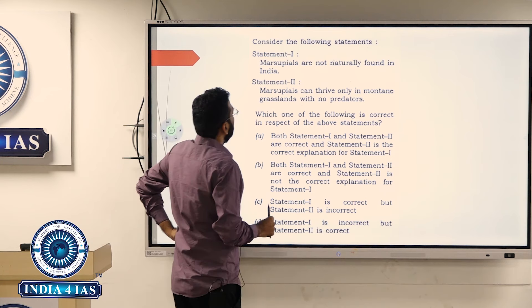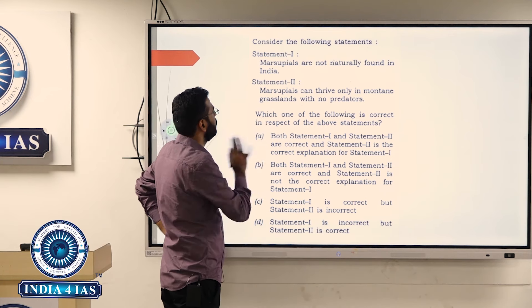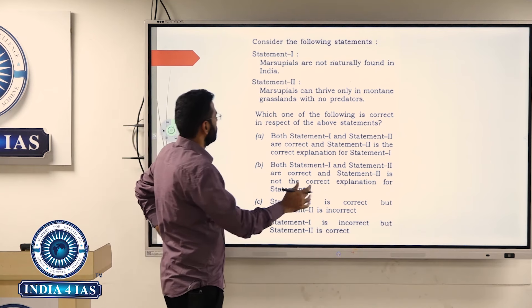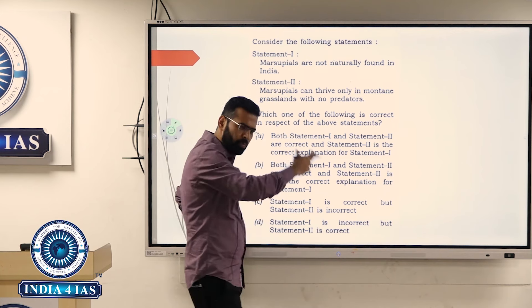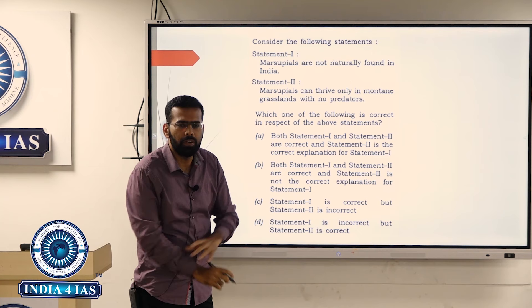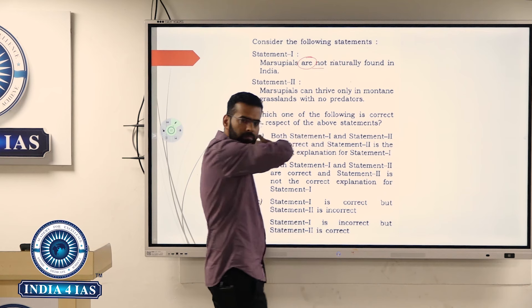Now this question, let's say he is giving two statements and trying to establish connection between them. Marsupials are not naturally found in India. Let's assume you don't know what is marsupial. He is saying they are not naturally found in India. What kind of statement is it? Specific statement. He is using 'are', it's a specific statement.